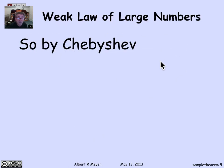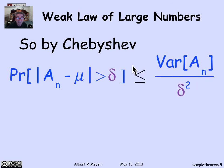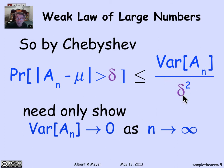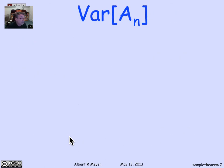That lets us apply the Chebyshev bound to the random variable a_n, because now we know what its mean is and its mean is independent of n. We can apply Chebyshev to the probability that the average of n trials differs from its mean by more than delta, and according to Chebyshev, that's bounded by the variance of the average divided by delta squared. So we will have proved the law of large numbers if we can prove that the variance of a_n goes to 0 as n approaches infinity, which is what the law of large numbers requires.